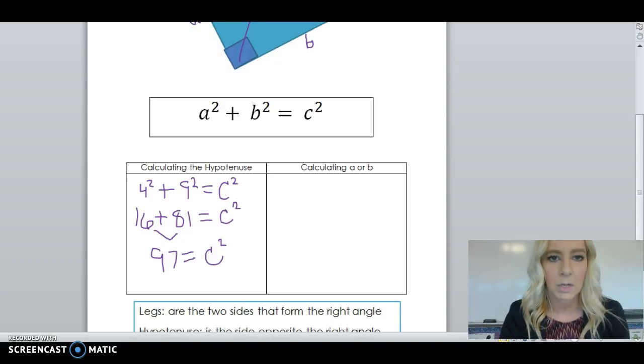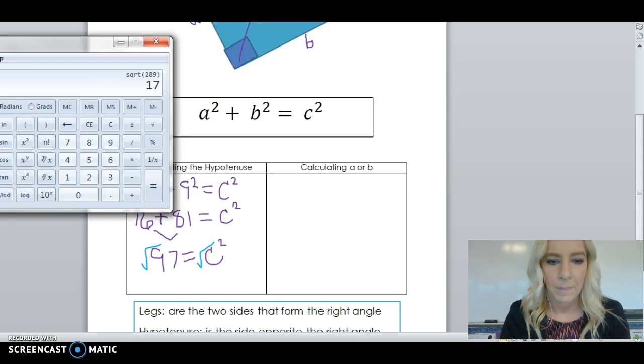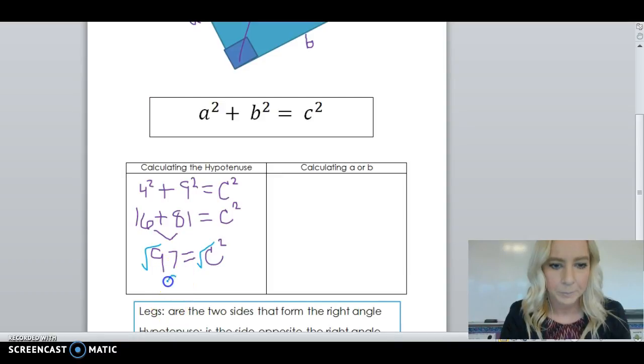And I'm going to take the square root of both sides. So, 97 square root is a decimal, we'll say about 9.8, is equal to C.